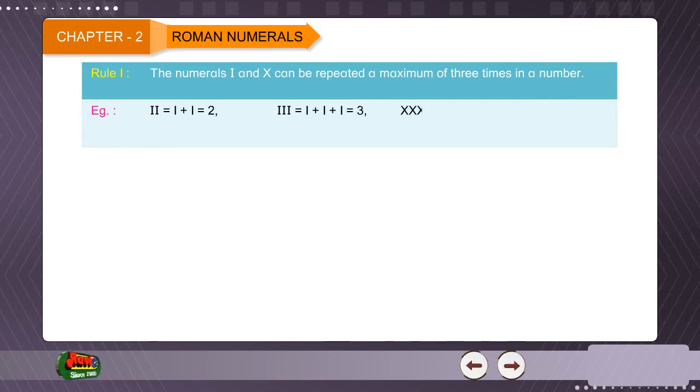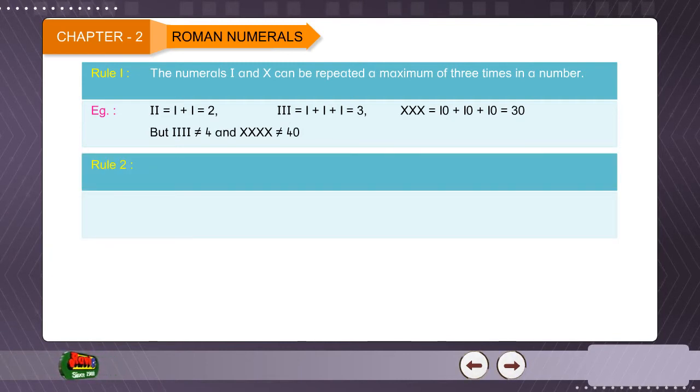XXX equals 10 plus 10 plus 10 equals 30. But, 4 times I not equal to 4, and 4 times X not equal to 40. Rule 2: The numeral V cannot be repeated. Example: 2 times V not equal to 10.